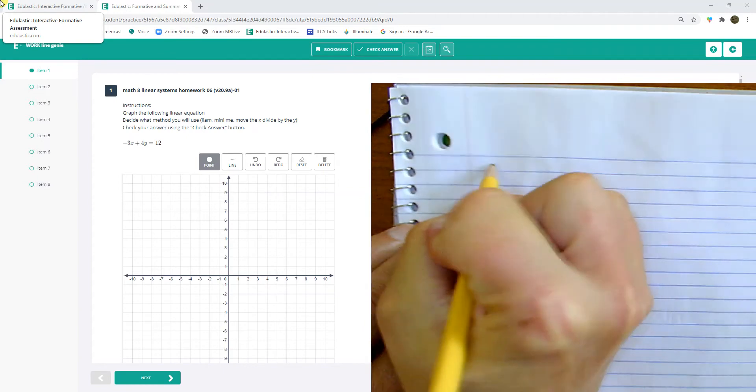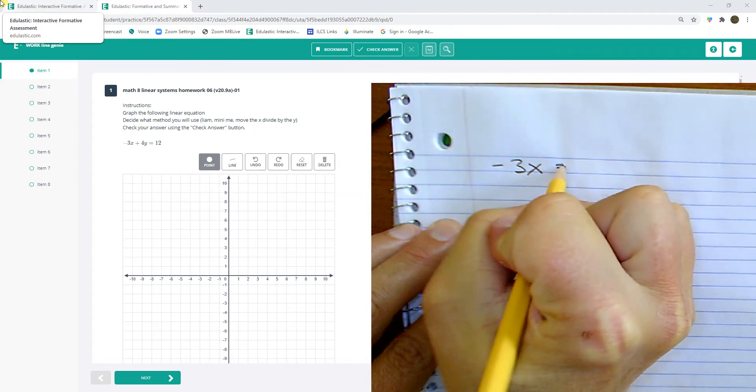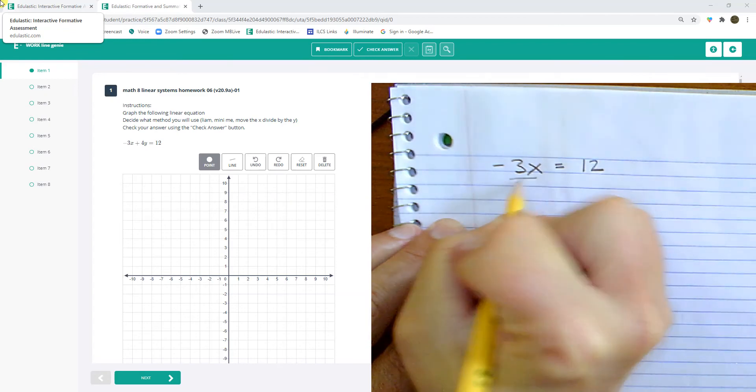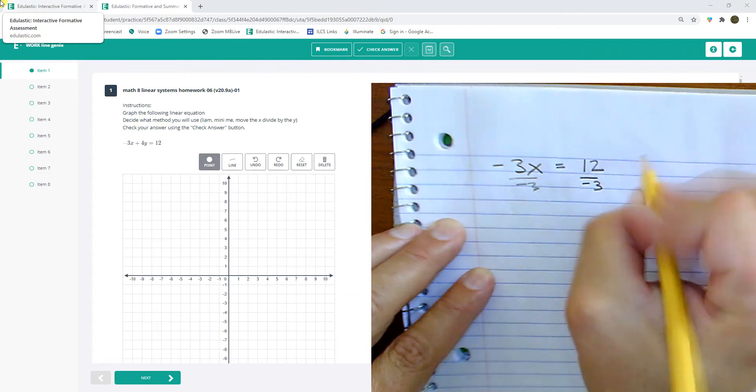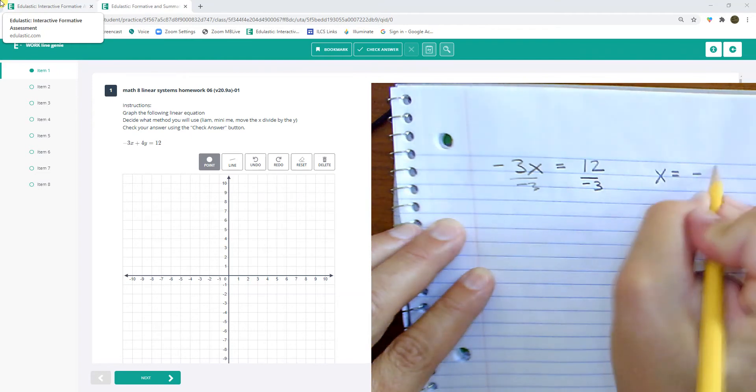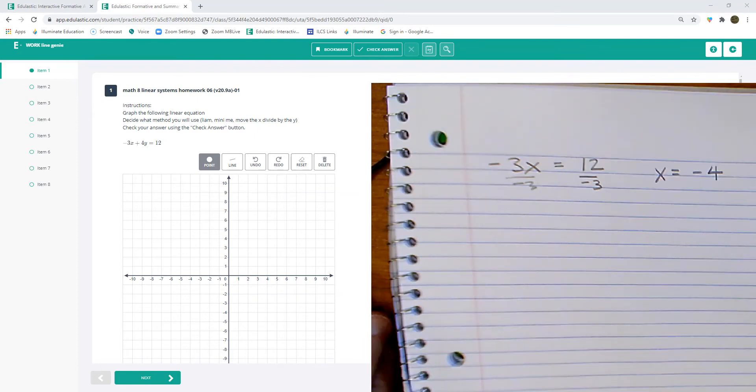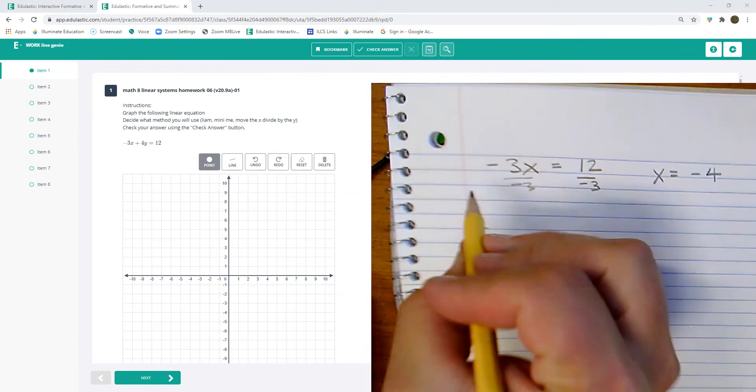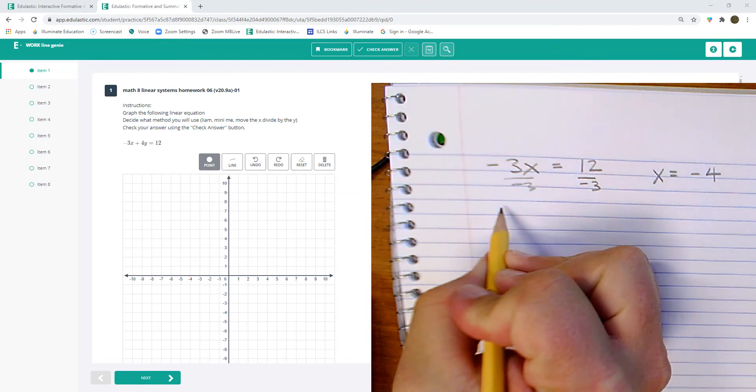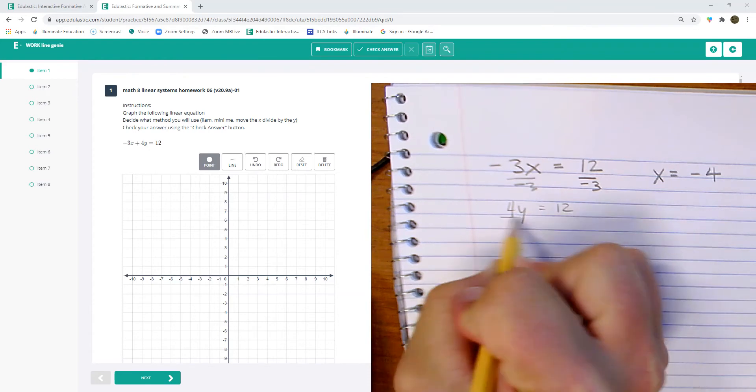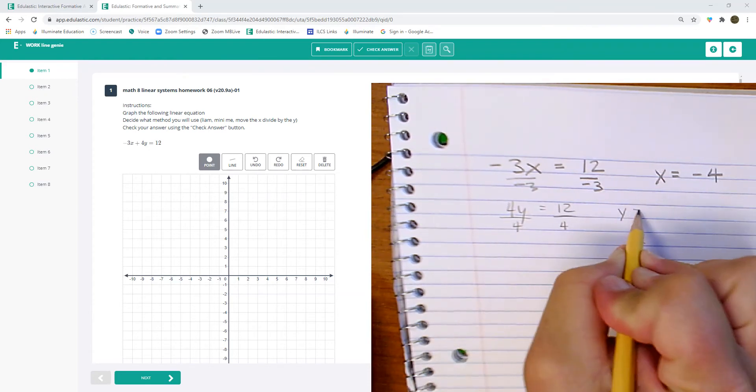So I have negative 3x equals 12, so x equals negative 4. And I have, I'm going to pause this and sharpen my pencil. And I'm back. And let's see, my other equation would be 4y equals 12.